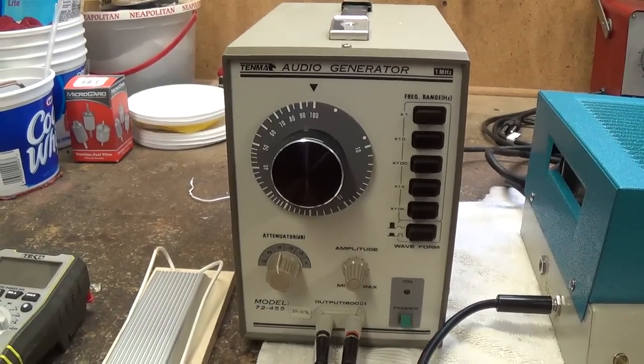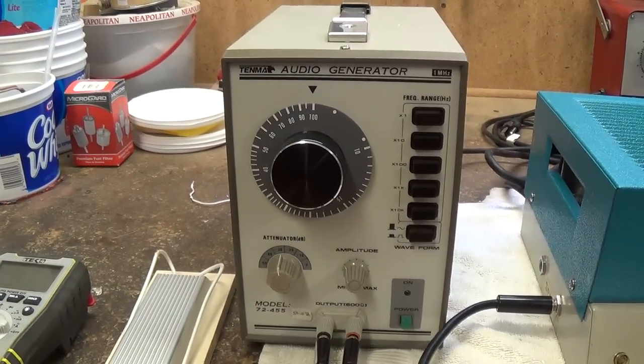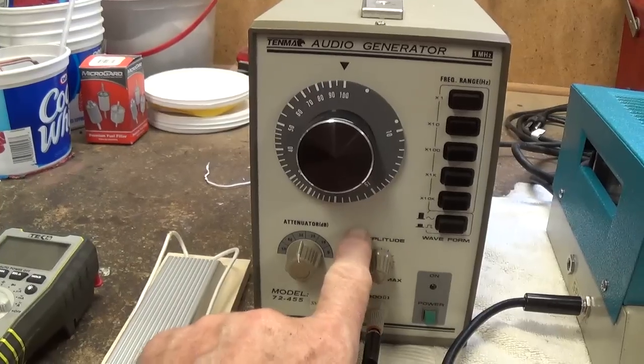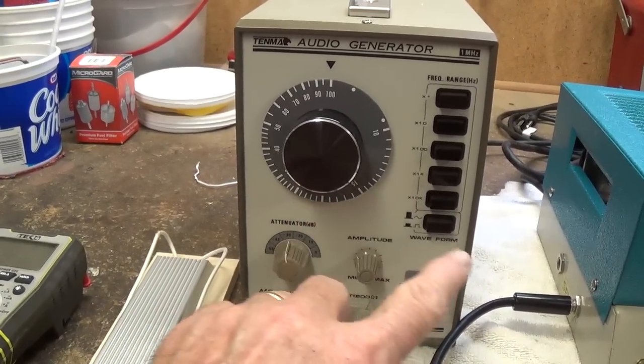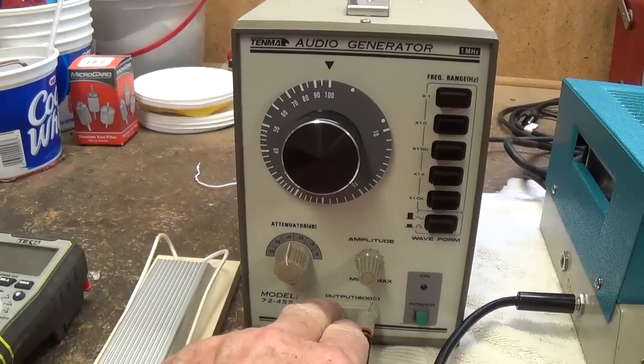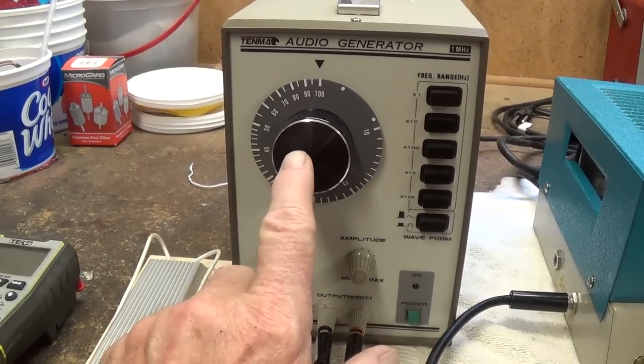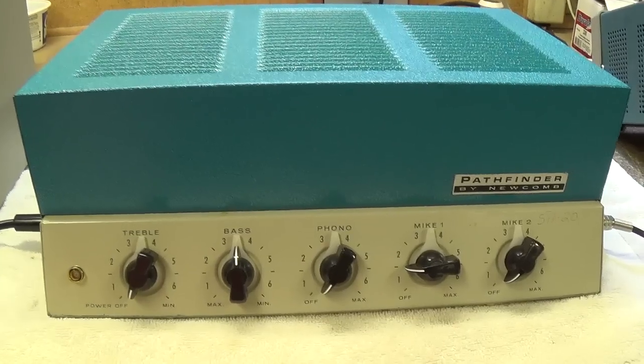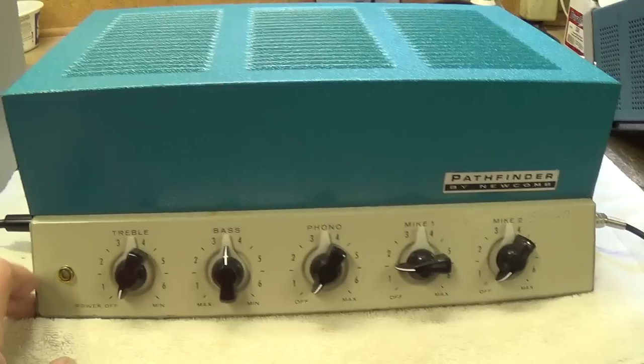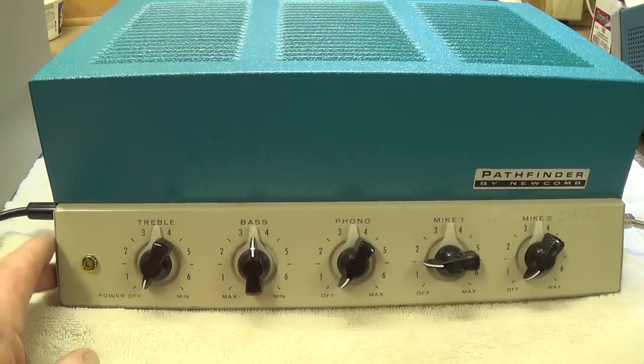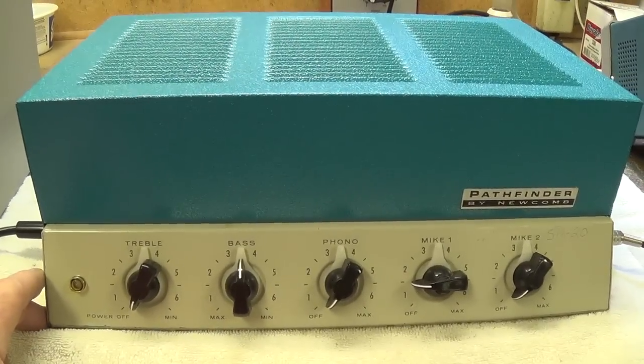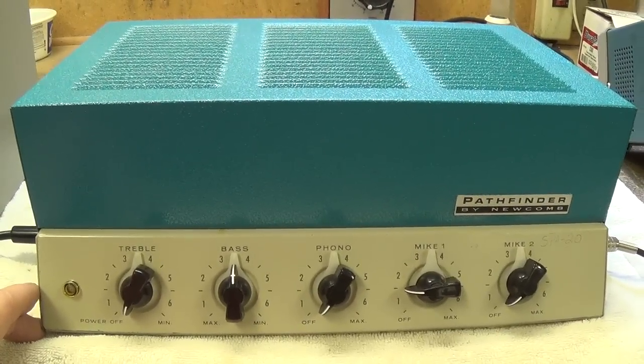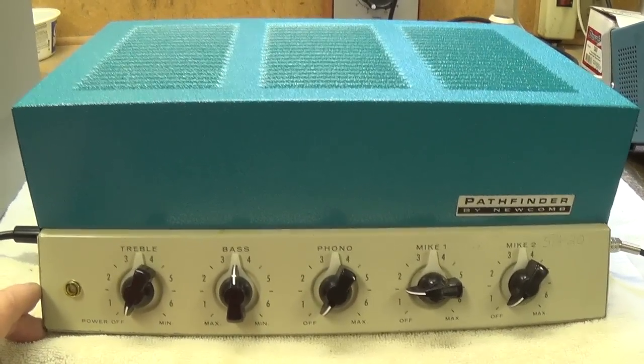Step one. Since amplifier output power is measured at a specific frequency, you have to have a frequency generator like this to create and input a 1000 cycle per second signal into the input of our amplifier. The amplifier in this case will be a Newcomb Pathfinder Model E20, with two 6BQ5 output tubes, which we expect to produce around 15 to 17 watts of output.